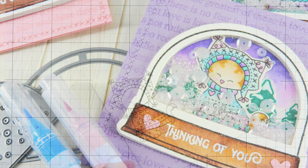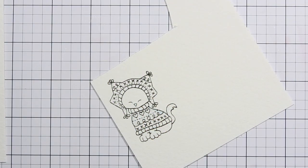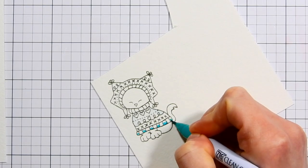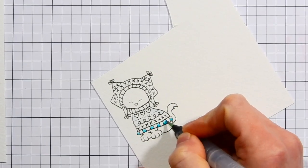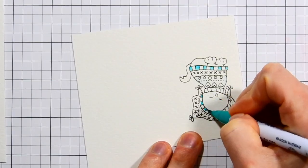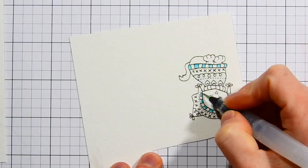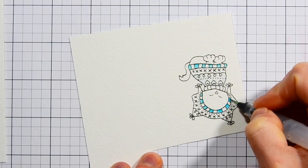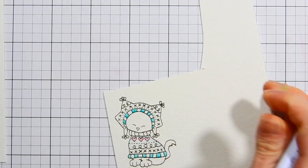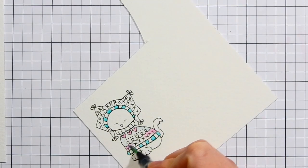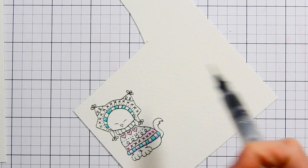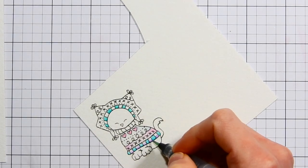To get started on my shaker card, I want to show you first the coloring process that I took for coloring these images. Now I'm only going to show you coloring of one of the images. I'm going to show you how I colored this adorable Newton image. However, I did color all the other images exactly the same type of way. I tried to use the same colors on each of the images and just adjusted where I colored each area with the different colors.